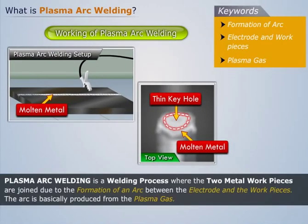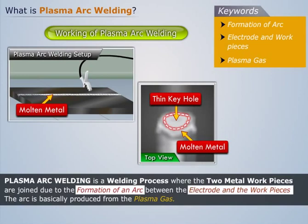Thus, we can say that plasma arc welding is a welding process where the two metal work pieces are joined due to the formation of an arc between the electrode and the work pieces. The arc is basically produced from the plasma gas.